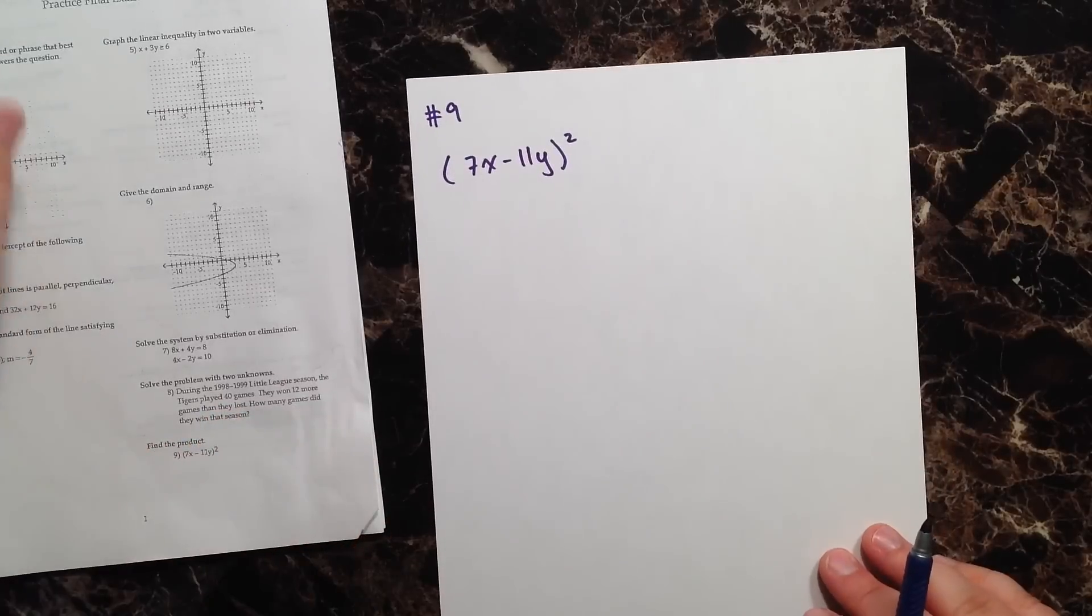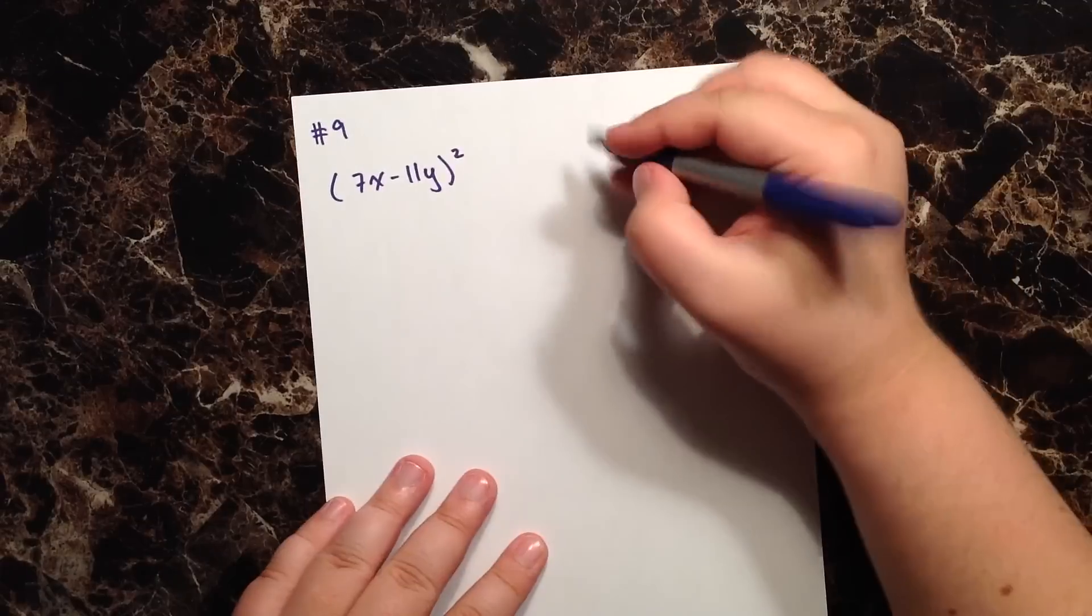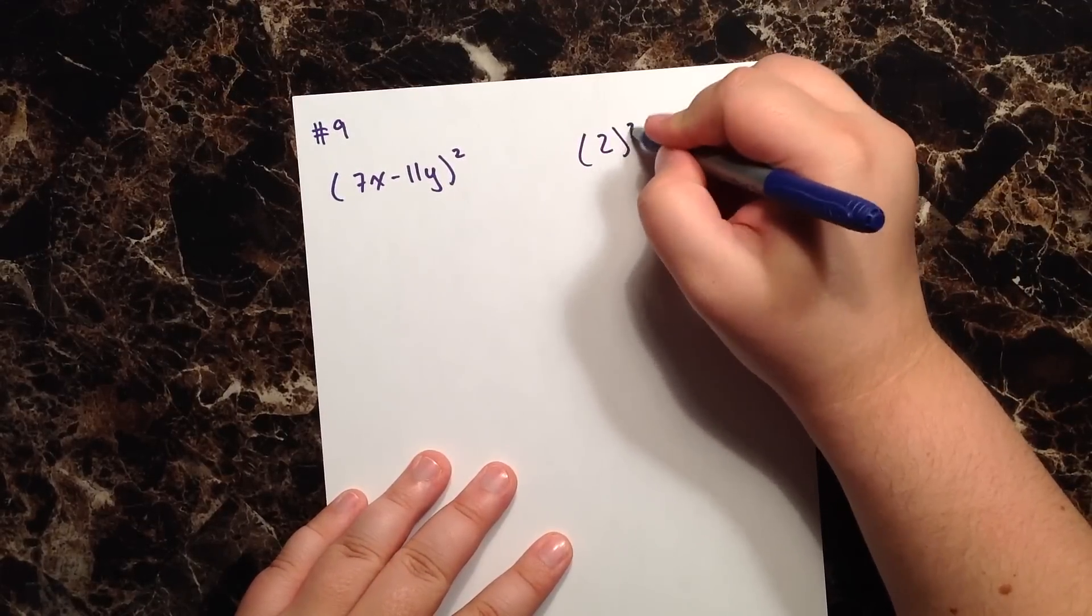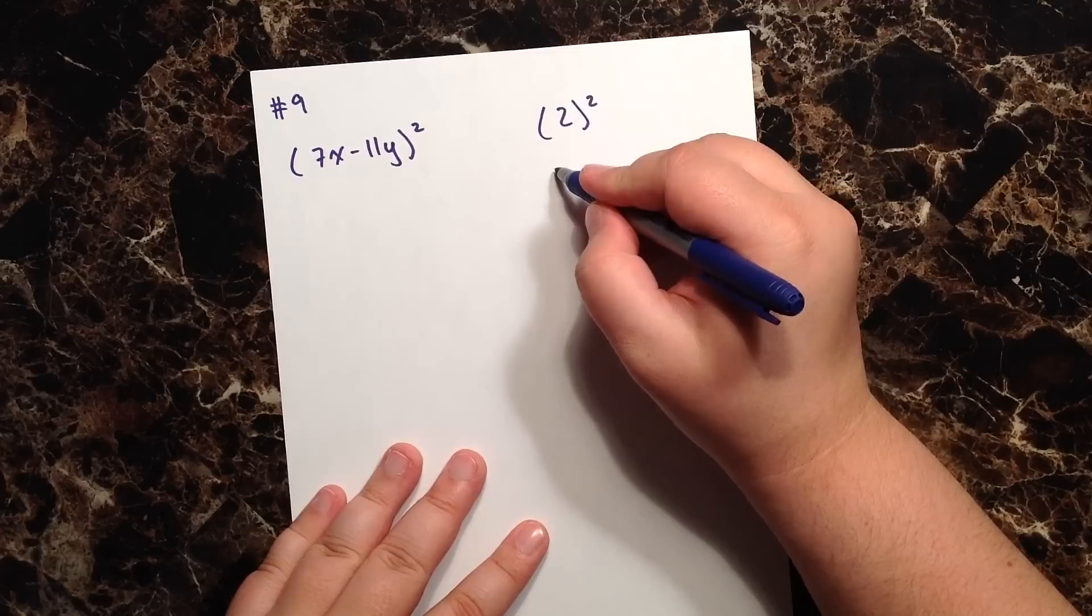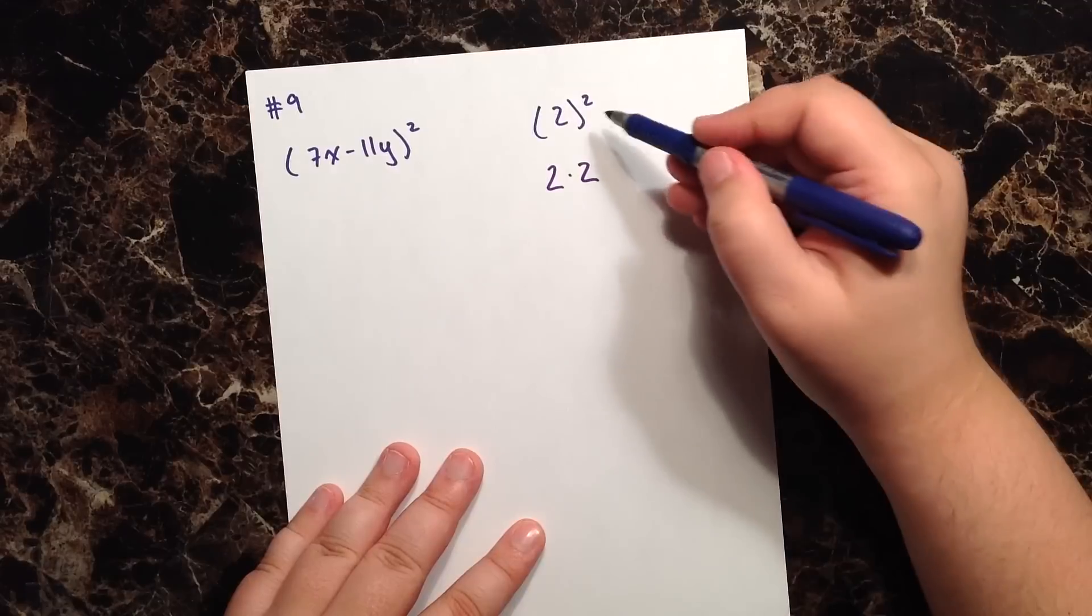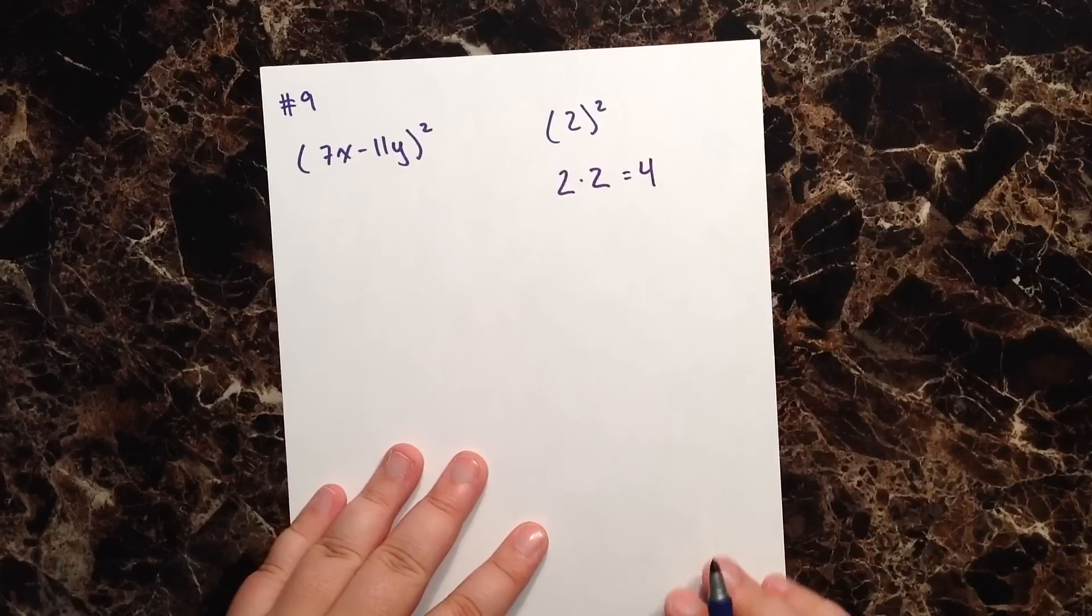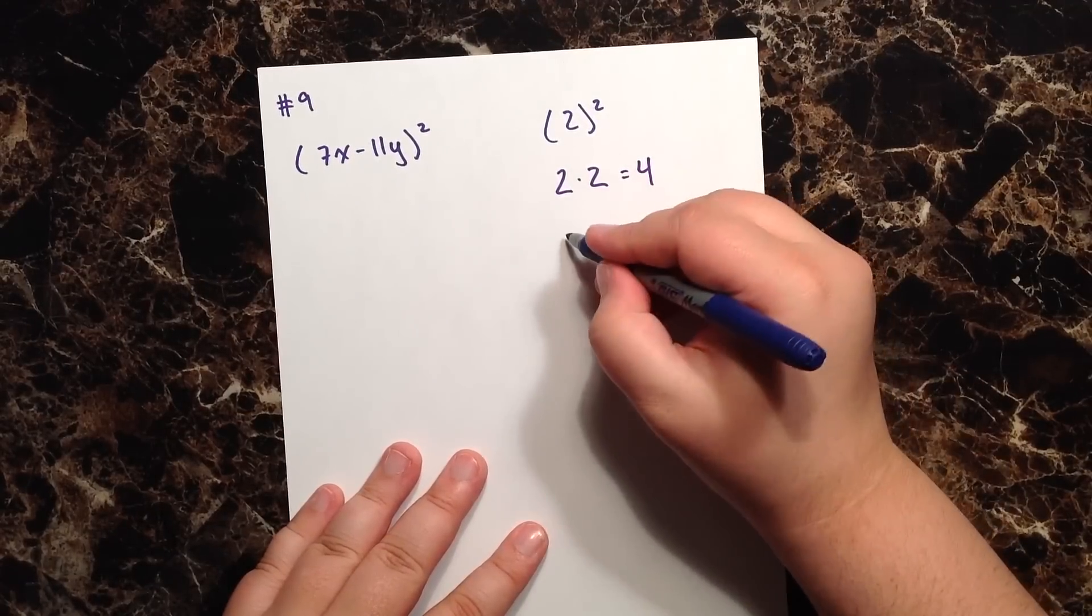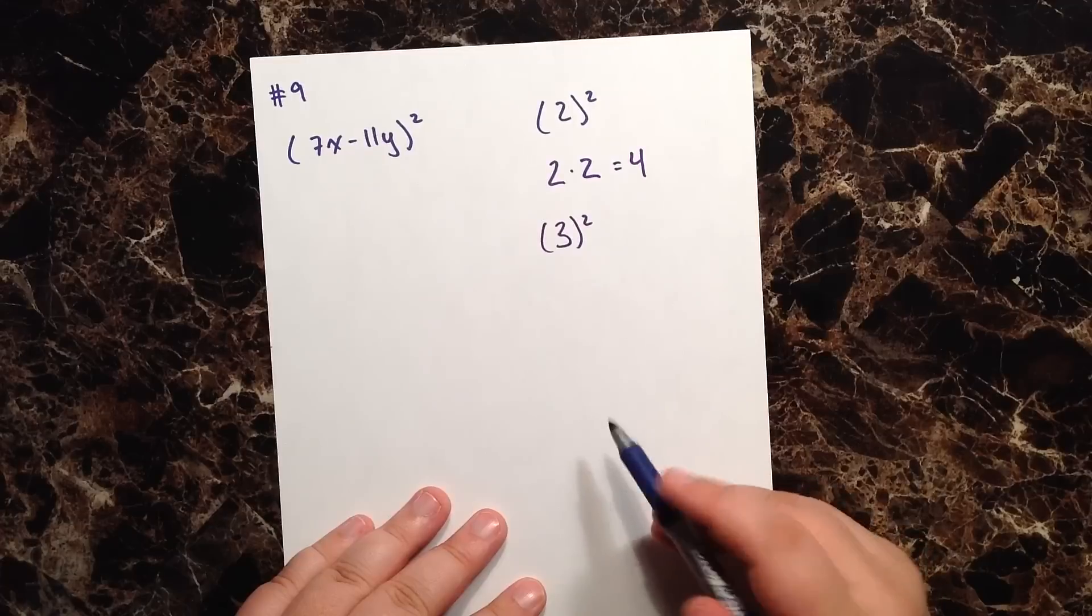Let's recall what it means when we square something. If I were to give you 2², hopefully you would tell me that means we're going to multiply 2 by itself twice, and of course that would be 4.